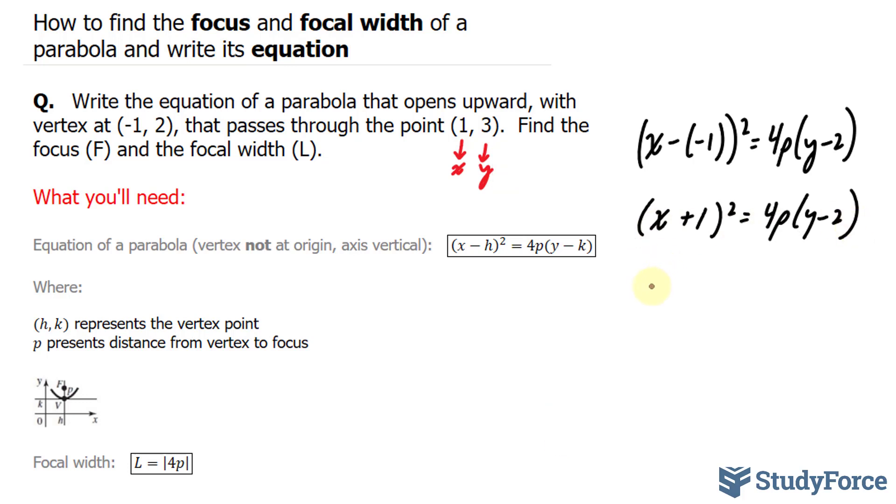We have (1 + 1)². I just substituted one into x, equals 4p(3 - 2). One plus one is two, to the power of two is four.